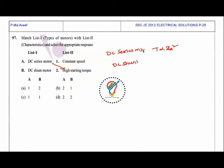In DC shunt motor, the speed is proportional to Eb by phi, so it's approximately constant speed. So DC motor is constant speed. A to B, 1 is the answer here.